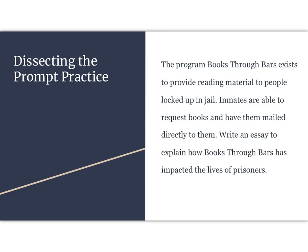Let's try one more. 'The program Books Through Bars exists to provide reading material to people locked up in jail. Inmates are able to request books and have them mailed directly to them. Write an essay to explain how Books Through Bars has impacted the lives of prisoners.' I've read the prompt — step one done. Step two: find the prompt sentence — go to the last sentence, there's 'write an essay.' Step three: underline it. Step four: find the keyword — 'explain.' That's informative, so I put an I for informative.